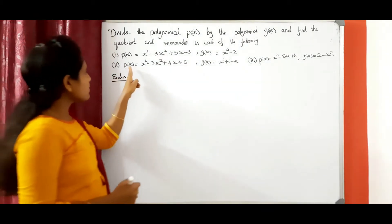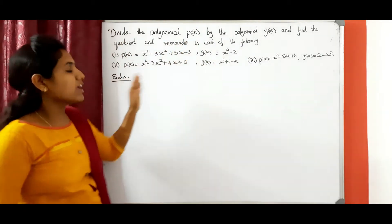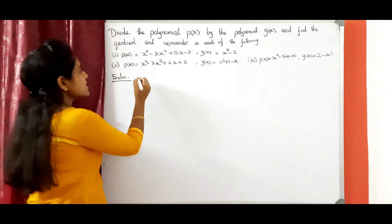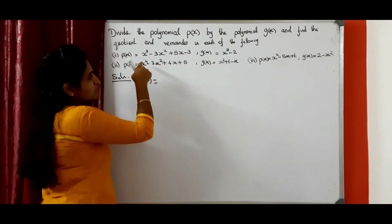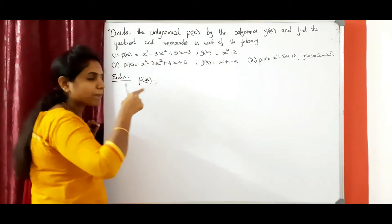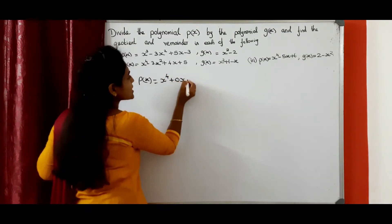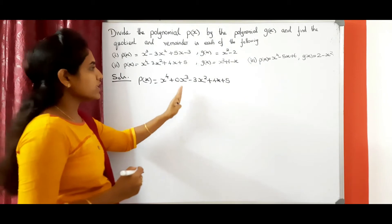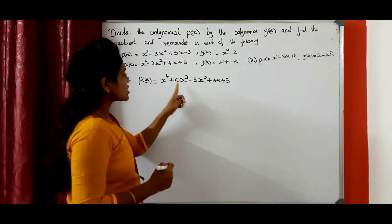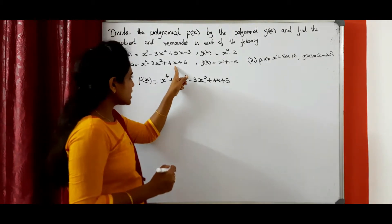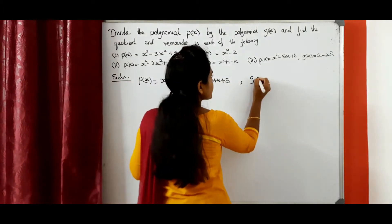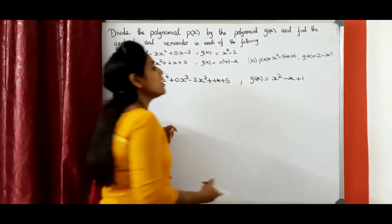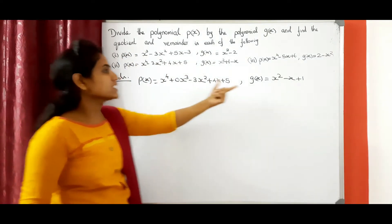Second problem: we need to divide the polynomial P of X by G of X and find the quotient and remainder. First step, we need to arrange the given polynomial properly. Any term not there means we need to apply 0. See here, P of X: X power 4 is there, X power 3 term is not there, so we need to apply 0. So X power 4 plus 0 X cube minus 3 X square plus 4 X plus 5. Before doing the long division method, first arrange the polynomial properly.